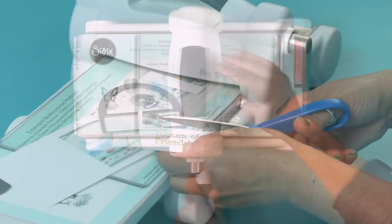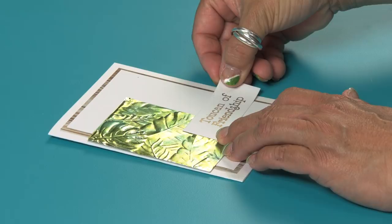Using the large die shape, die cut around the words and trim off the handles of the shape. Adhere to the lower right of the card and trim off excess paper on the right.